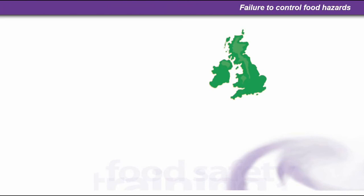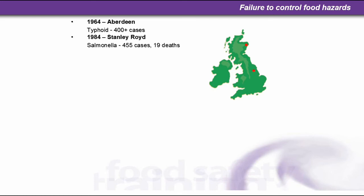Looking at the failure to control food hazards: in 1964 in Aberdeen, there were over 400 cases of typhoid, a foodborne disease. In 1984 at Stanley Royd Hospital, there were 435 cases of salmonella food poisoning and 19 deaths. In 1989 in Birmingham, Clostridium botulinum caused 27 cases and 1 death.